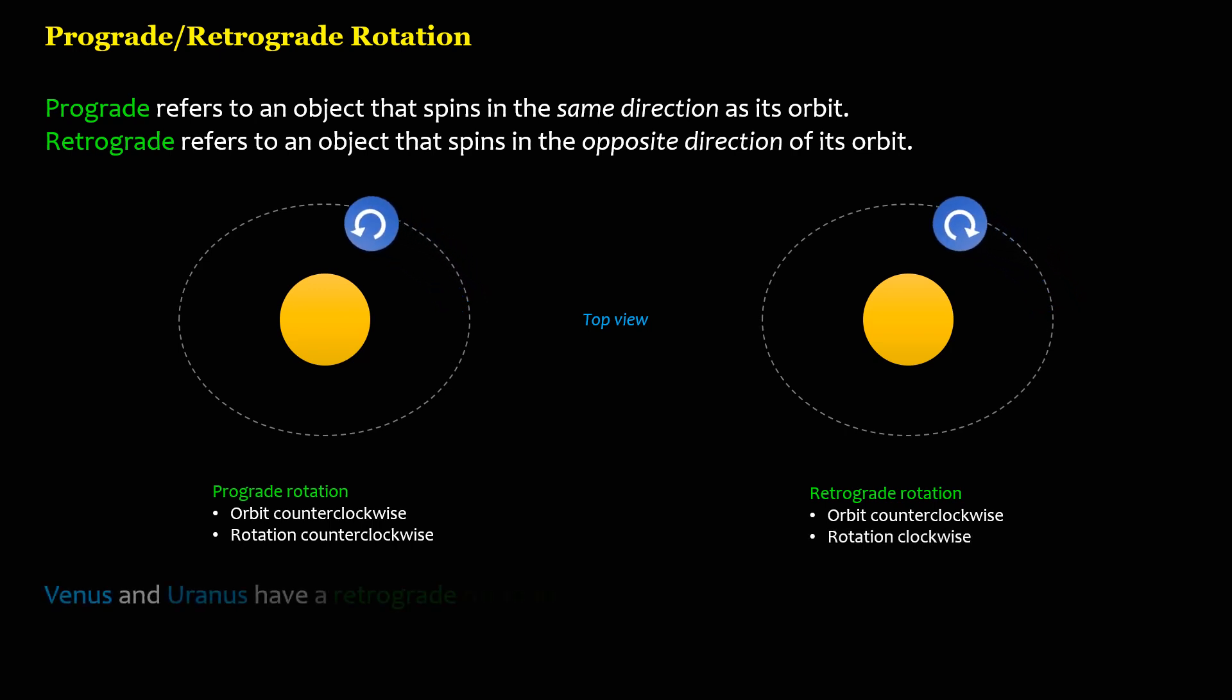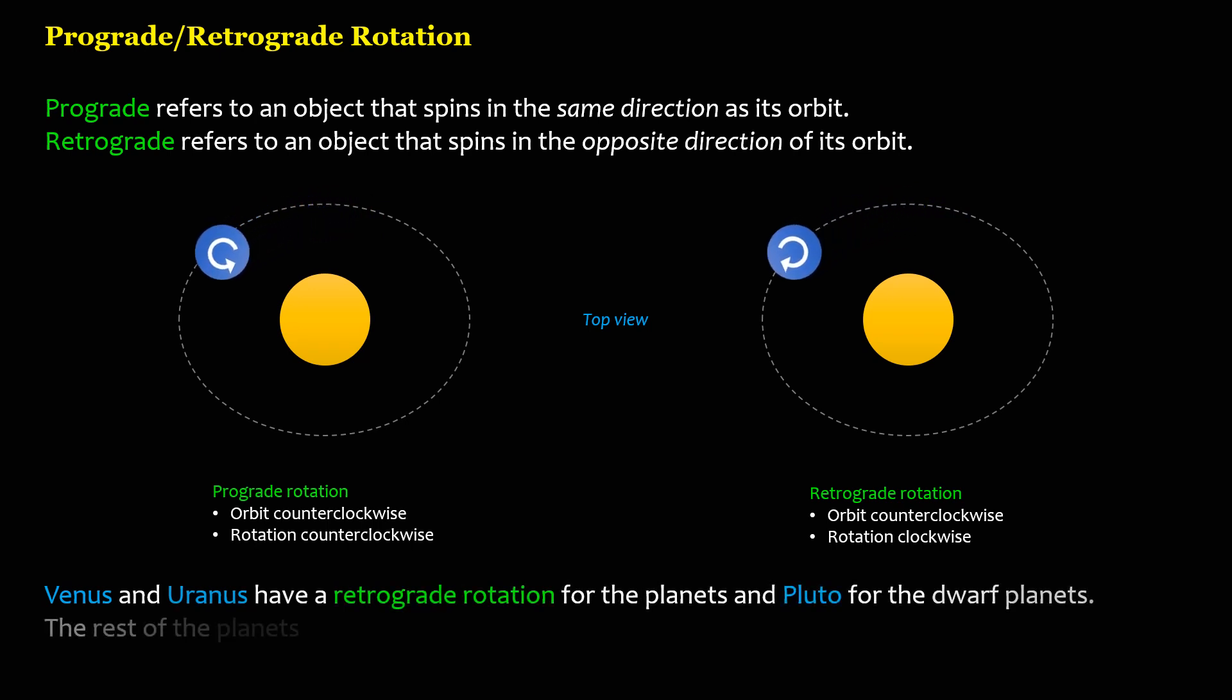Venus and Uranus have a retrograde rotation for the planets and Pluto for the dwarf planets. The rest of the planets and dwarf planets have a prograde rotation.